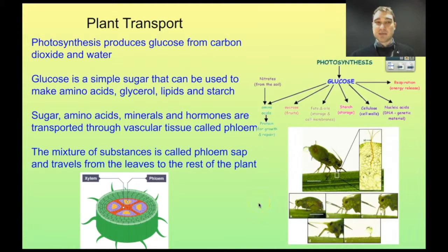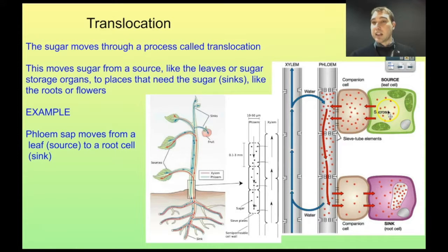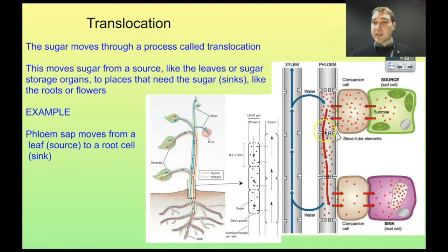The sugar moves through a process called translocation. This is where we have a source, like the leaves of the plant or the sugar storage organs, and then we have a place that needs that sugar, which we call a sink. This could be the roots of the plant or it could be flowers. Here we have sucrose, a sugar, in a leaf cell. It's traveling through a companion cell and then into the phloem. From the phloem, water goes in, giving us a high concentration at the top and a low concentration down at our sink — our root cell. Water carries the sugar down the phloem until we get to the companion cell, and then the sugar goes into our sink.